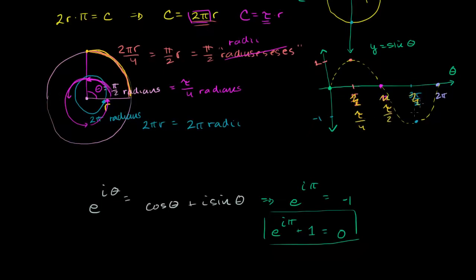3 pi over 2 is 3 tau over 4. And then 1 revolution is tau. Now when you look at it this way, you know exactly where you are in the unit circle: one fourth around, halfway around, three fourths of the way around, and then all the way around.